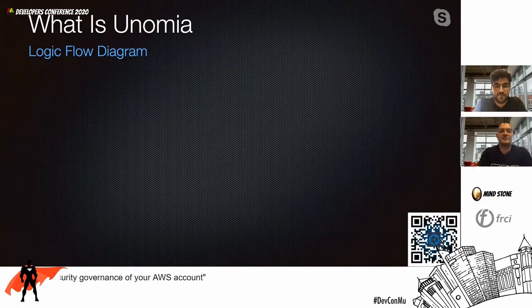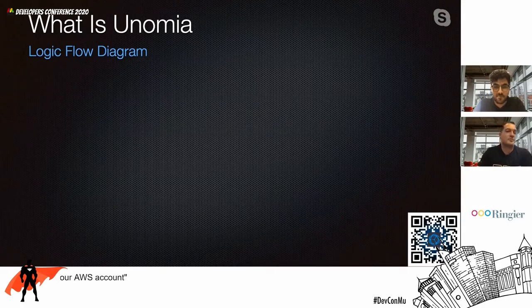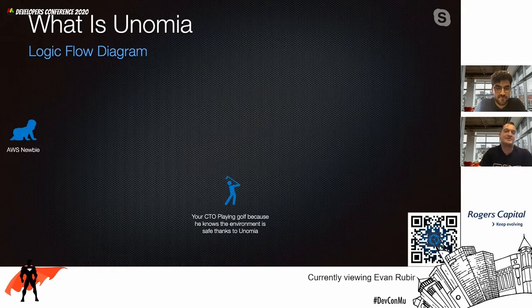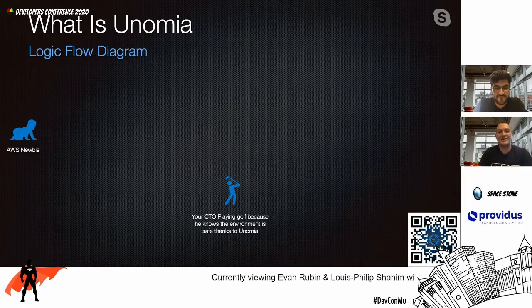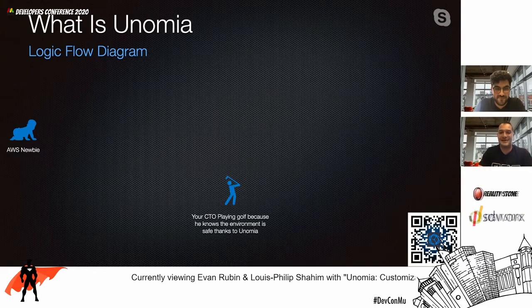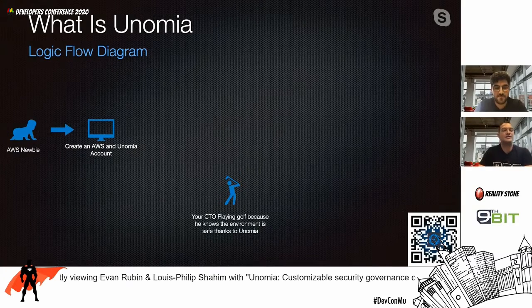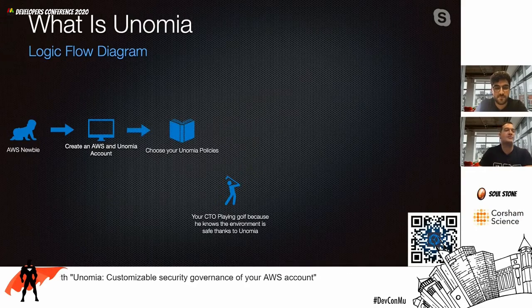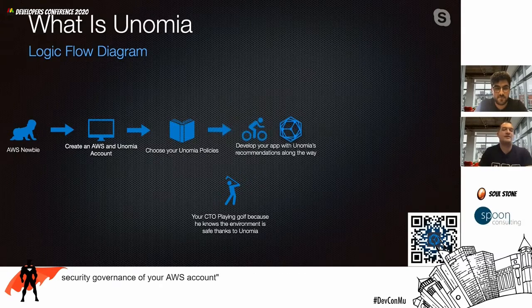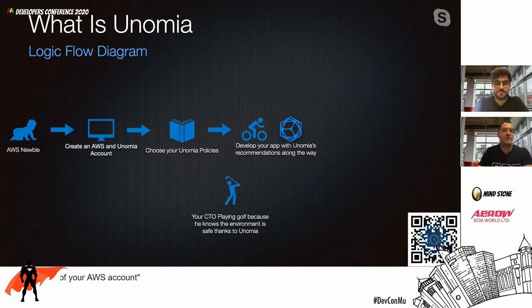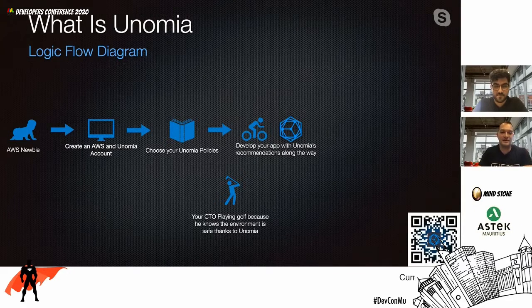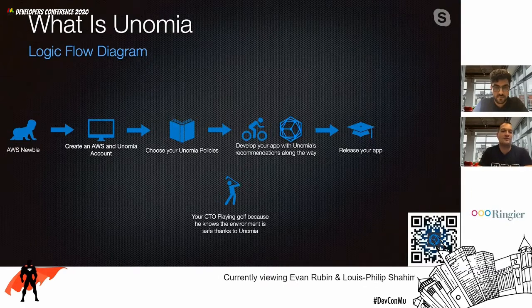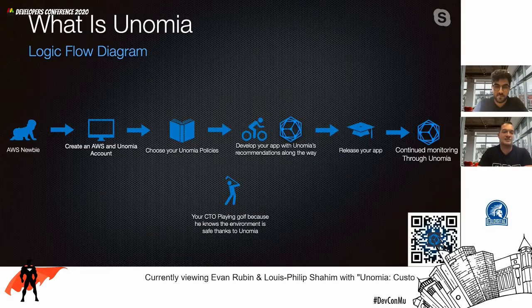Now let's walk you through the logic flow diagram of Unomia. First, we find ourselves an AWS newbie. The most important part: your CTO can go out and play golf, because he knows that thanks to Unomia, his environment will be safe. Next, we need an AWS account created as well as a Unomia account that links to your AWS account. We then choose some Unomia policies to help secure our workload, then develop our application free of any bottlenecks — with Unomia watching and notifying us of anything misconfigured. Once happy, we release it to the public, and remember to keep monitoring through Unomia for any configuration or infrastructure changes.